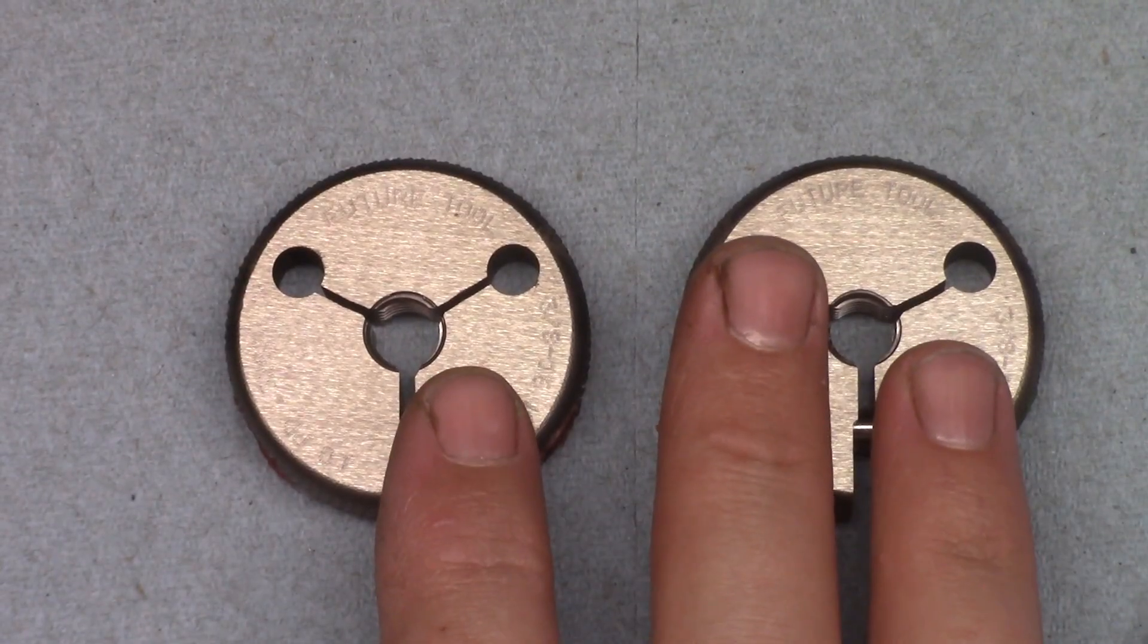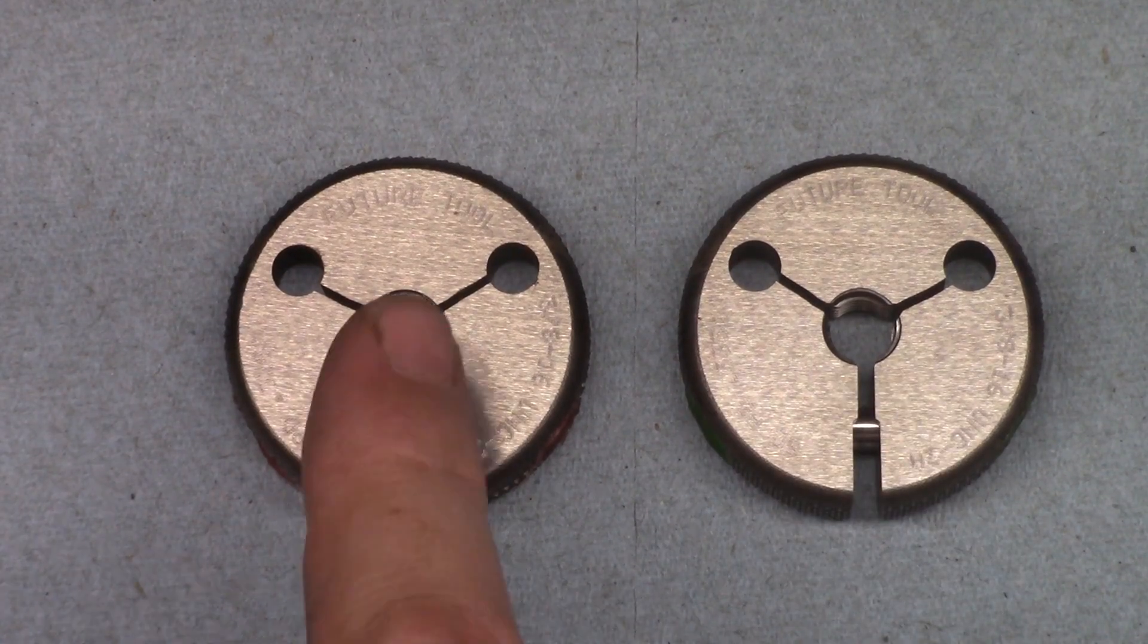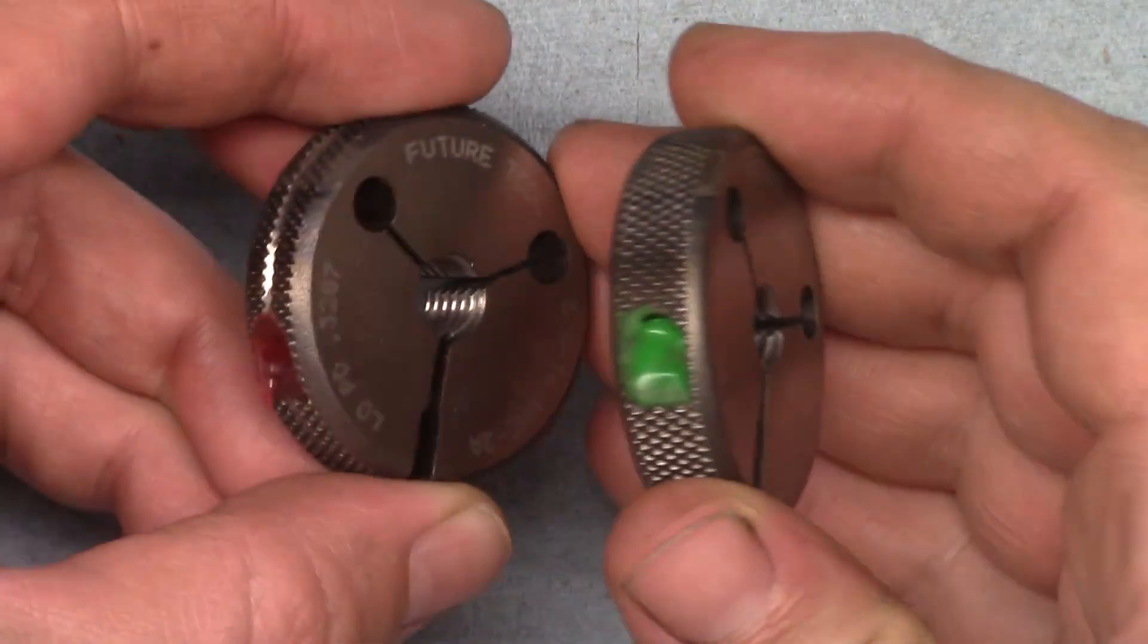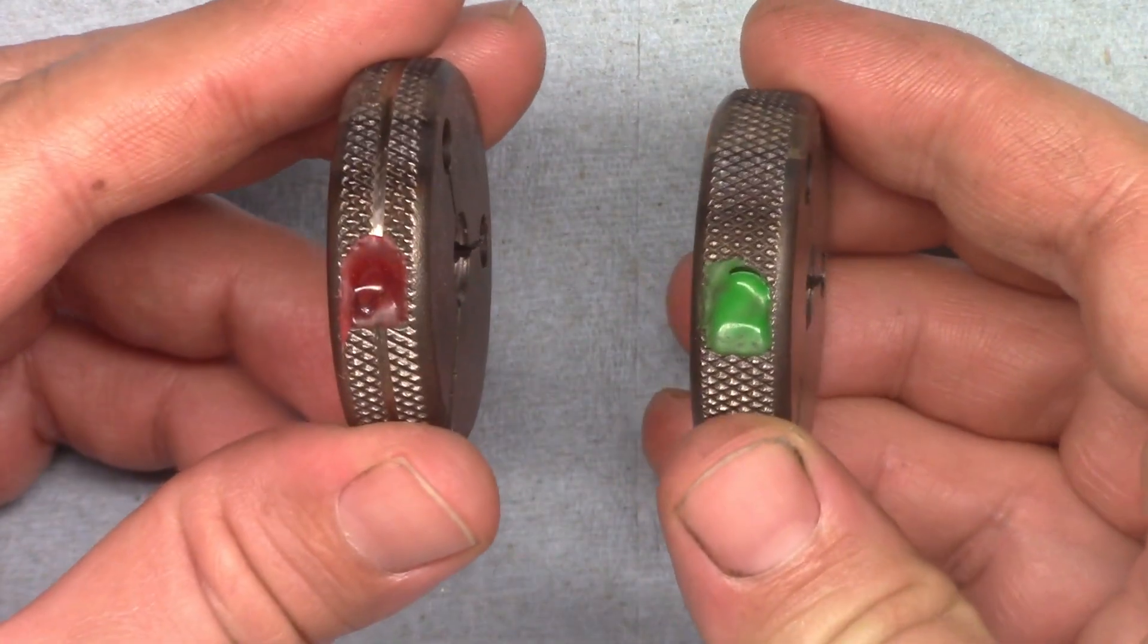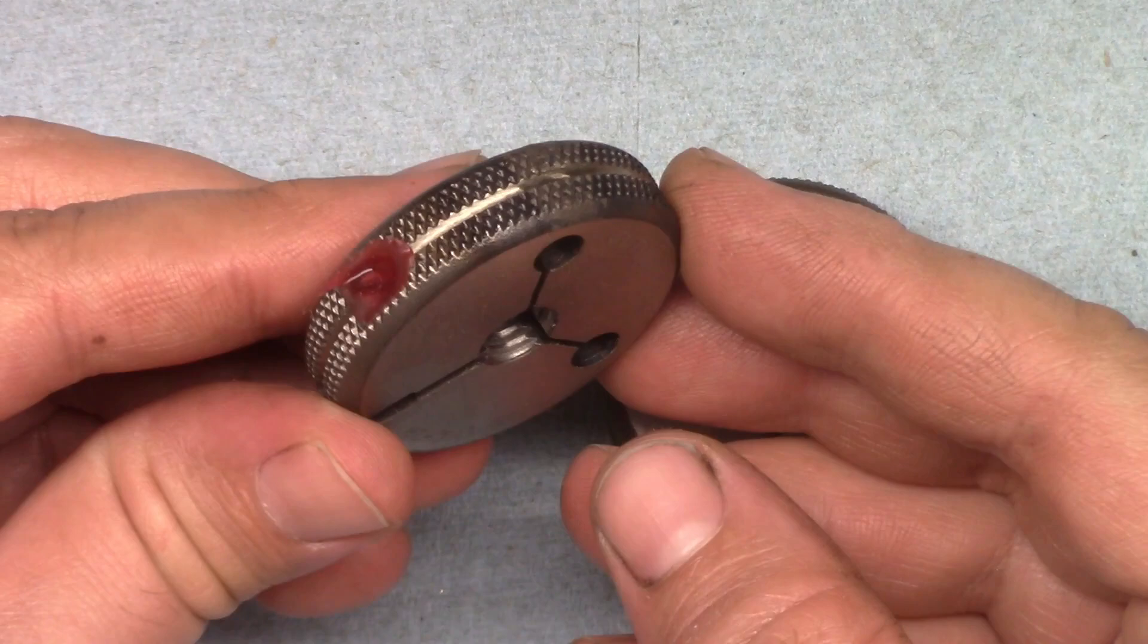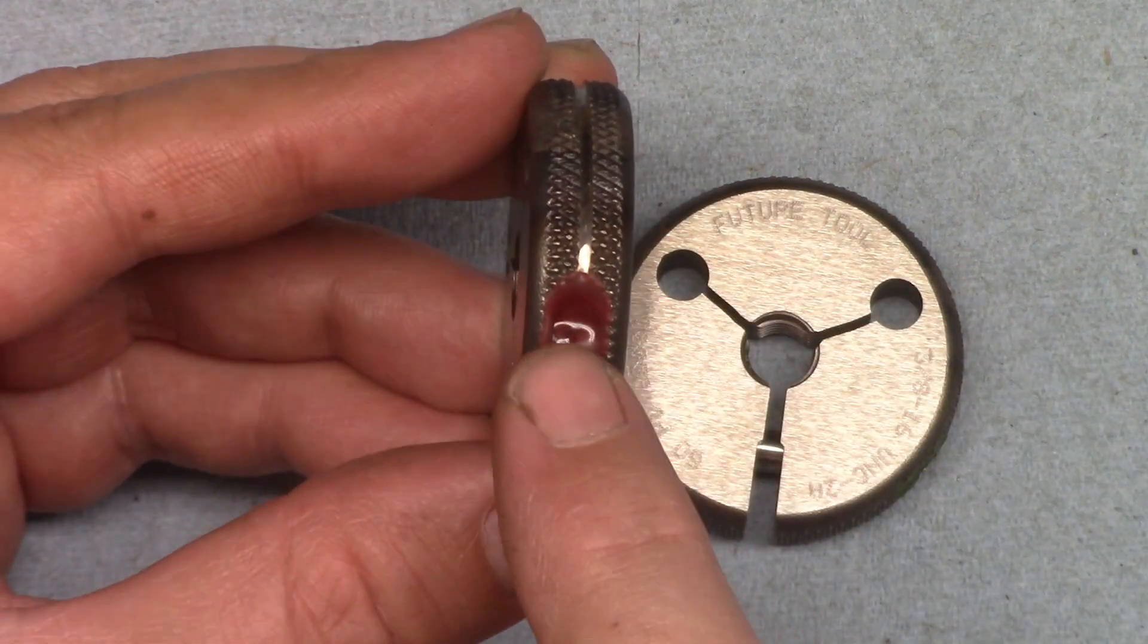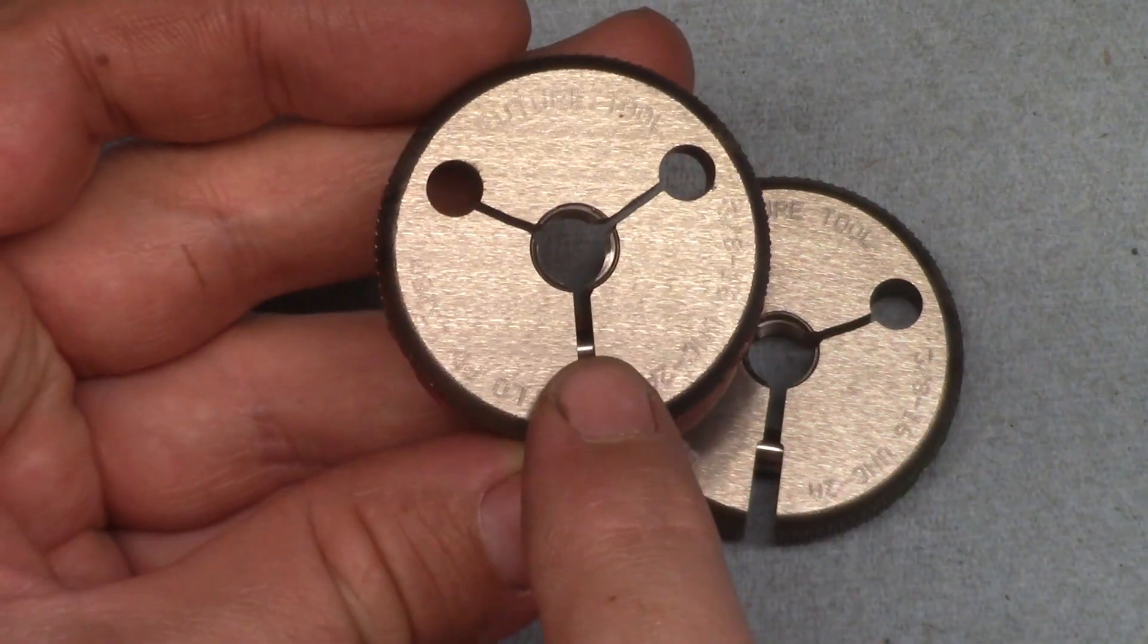In the case of the ring gauges, the go gauge is the high side of the pitch diameter range, and the no-go gauge is the low end. The gauges are color-coded for easy identification, green for go and red for no-go, and the no-go has a groove around the outside as well in case you're one of the 300 million colorblind people in the world.